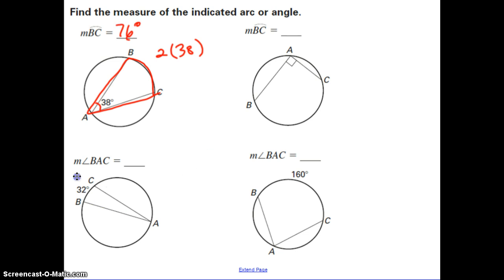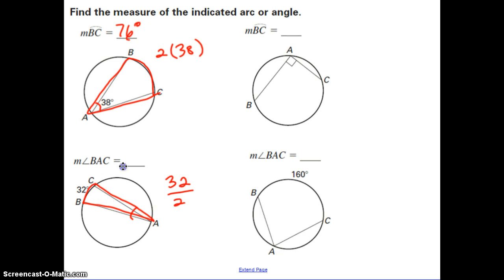In this example, we're looking for the measure of angle BAC. We're given the measure of the intercepted arc BC. Since the angle is half of the intercepted arc, we divide the arc by 2 to get an angle measure of 16 degrees.